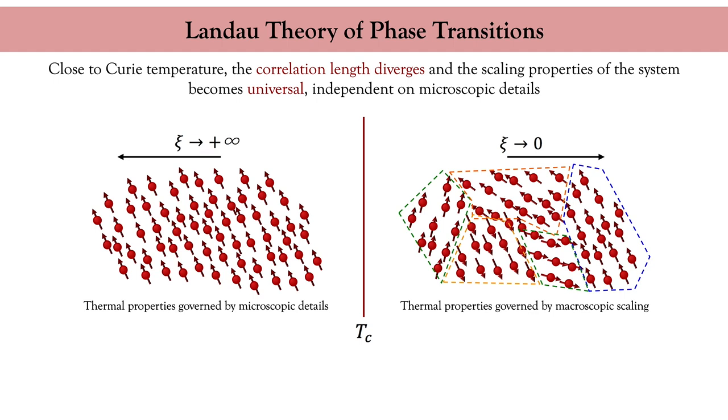Now if you lower the temperature from the paramagnetic phase and get closer to the Curie temperature, the correlation length increases and diverges towards infinity in the paramagnetic phase. Therefore the length scale that controls magnetism is no more the microscopic scale of the inter-atomic magnetic interactions, but rather the macroscopic scale of the correlation length.